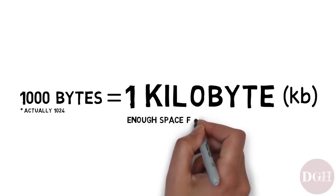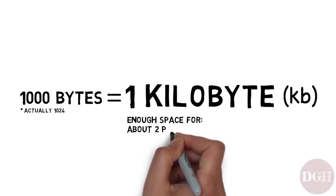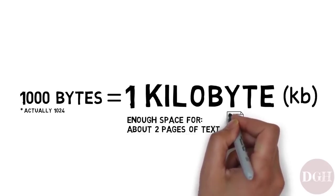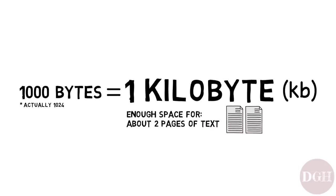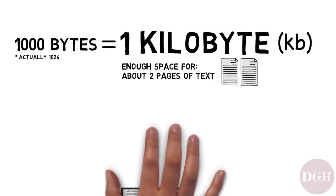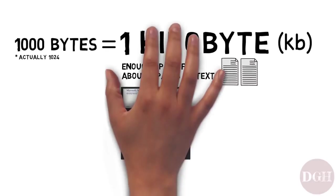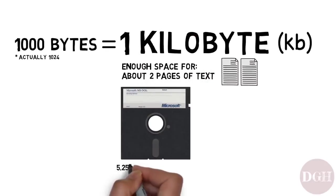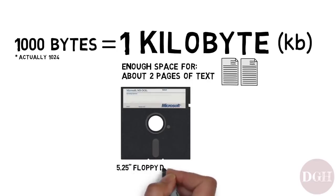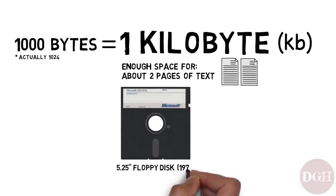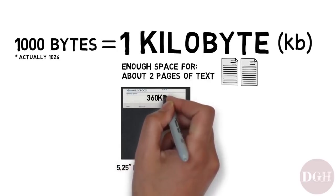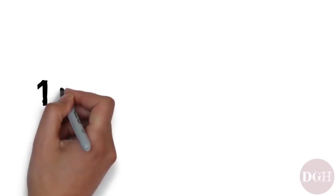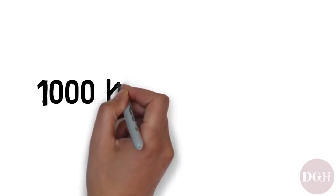One kilobyte is enough space to hold about two pages of text. Back in the late 1970s and early 1980s, the 5.25 inch floppy disk was a popular storage option. It could hold 360 kilobytes of information.